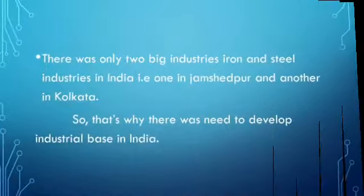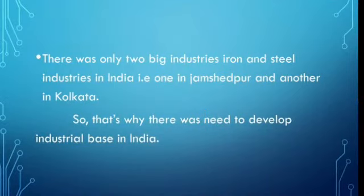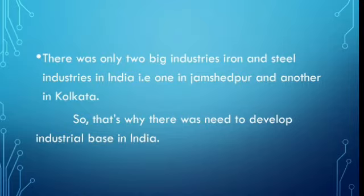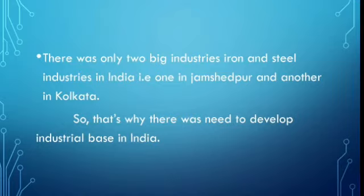We had seen in the earlier chapter that our industrial sector was very weak. There were only a few varieties of industries here, and those that existed were only jute and cotton textile. There were only two big industries — iron and steel.